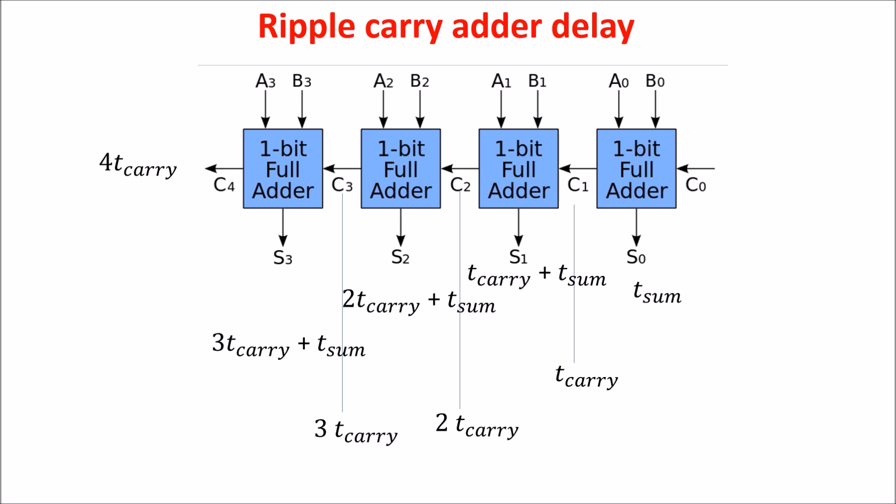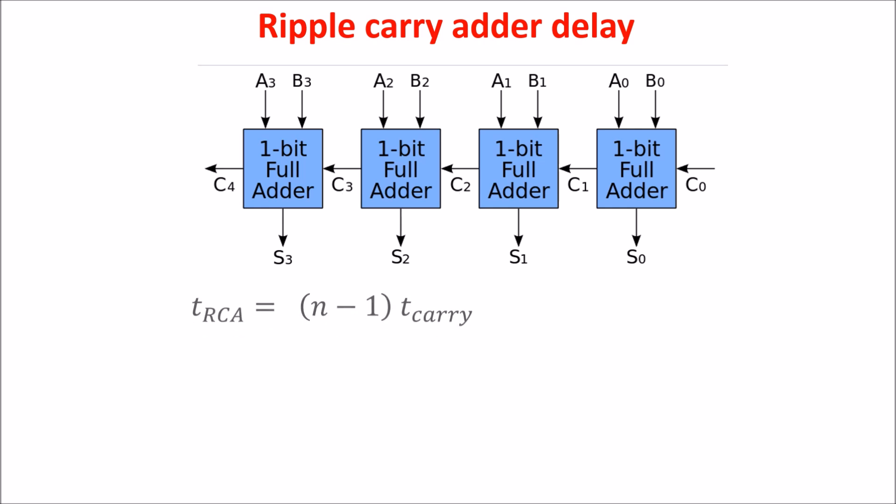So the longest time could be S3 with three T carry plus T sum or C4 with four T carry. We have to wait, surely, three T carry plus the longer between T sum and T carry. So in general, we have to wait N minus one T carry plus the larger between T carry and T sum.